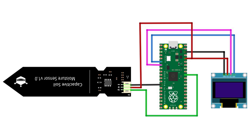The OLED display has 4 pins: VCC, GND, SCL, and SDA. Connect the VCC pin to 3.3V on the Raspberry Pi Pico, the GND pin to the ground pin, the SDA pin to GP4, and similarly the SCL pin to GP5.